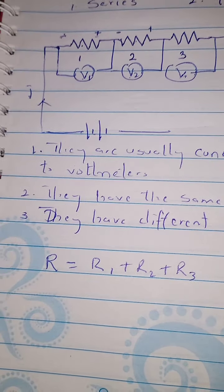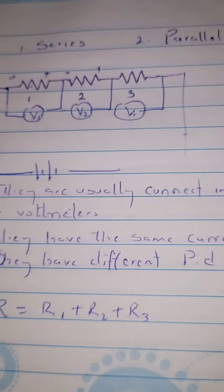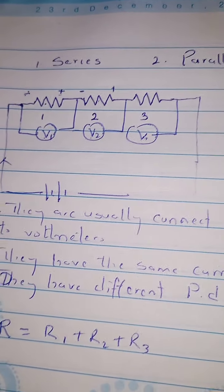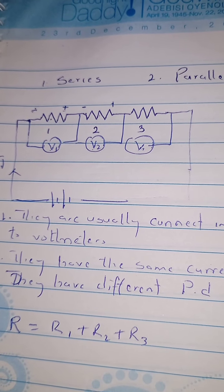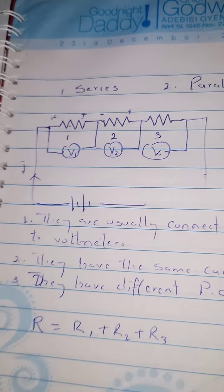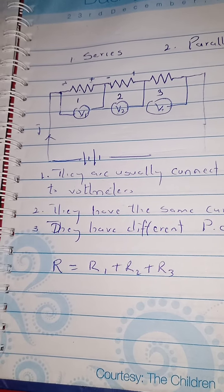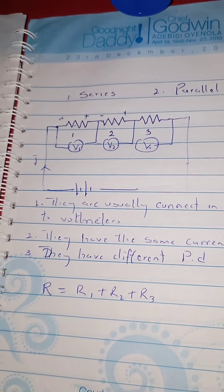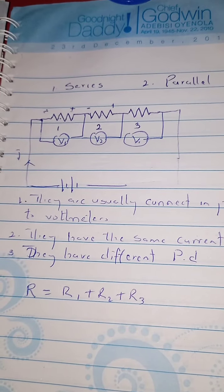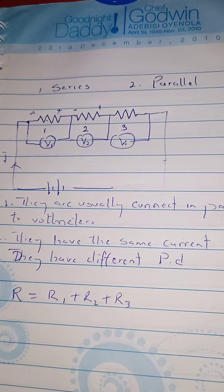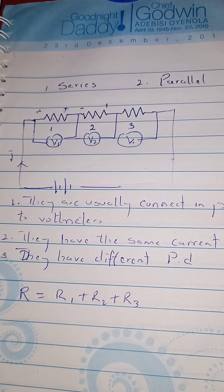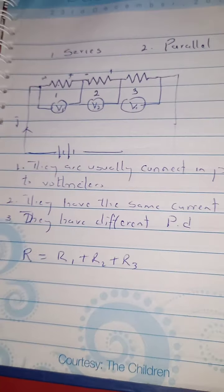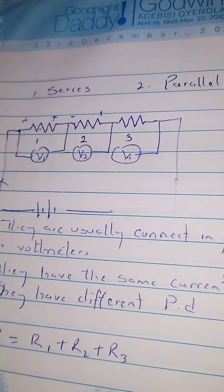To recap: whenever resistors are connected in series, different amounts of potential difference flow through them, but the same amount of current flows through them. They have the same current but different potential differences. Also note that in an arrangement of resistors in series or in parallel, voltmeters are usually connected in parallel with the resistors.